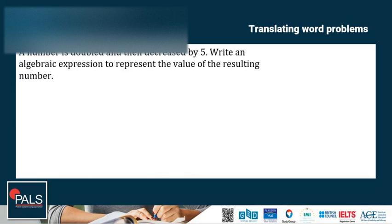Now, let's try an example. First, a number is doubled and then decreased by 5. Write an algebraic expression to represent the value of the resulting number. You are not given the variable in the question, so your first step is to choose a variable to represent the unknown value. Let's use n. Now, if n is doubled, it is multiplied by 2, resulting in 2n. It was then decreased by 5, which means 5 is subtracted from it. Therefore, the final expression is 2n minus 5.